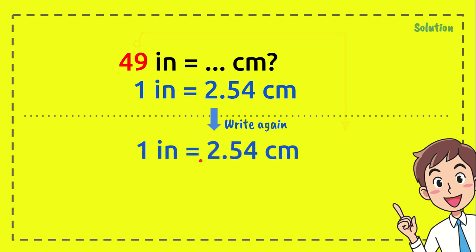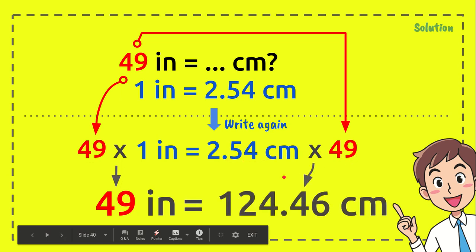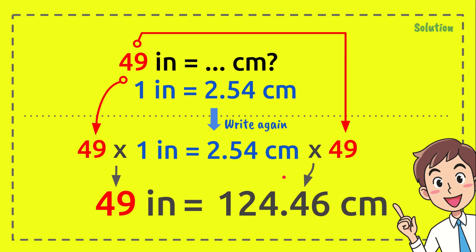We're going to multiply 49 with 2.54 centimeters and 1 inch with that number as well. 49 times 1 inch equals 49 inches, and 2.54 centimeters times 49 equals 124.46 centimeters.